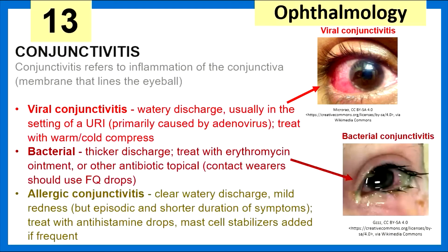Conjunctivitis — inflammation of the conjunctiva. There's viral, bacterial, and allergic. In viral, there's a watery discharge, often in the setting of a URI, and we treat with warm and cold compress — no medication. Bacterial has a thicker discharge and we treat it with erythromycin ointment or another topical antibiotic. With contact lens wearers, we use fluoroquinolones to cover Pseudomonas.